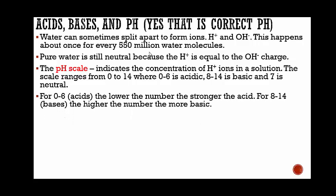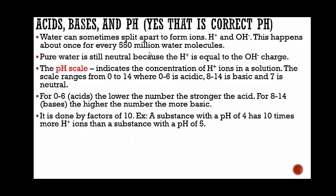For acids, which are 0 to 6, the lower the number, the stronger the acid is. For 8 to 14, the bases, the higher the number, the more basic. It is done by factors of 10. For example, a substance with a pH of 4 has 10 times more hydrogen ions than a substance with a pH of 5.